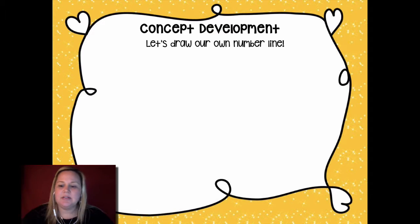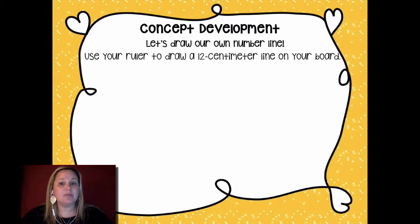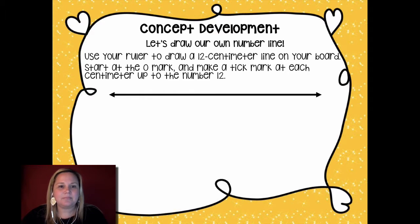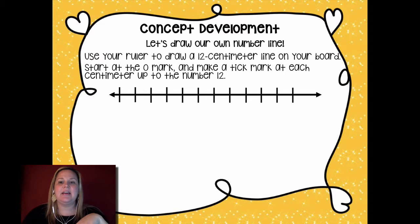If you have your materials, here's how you're going to do this. You're going to use your ruler to draw a 12 centimeter line on your board. So take your ruler, stretch it across your paper, draw from zero to 12, draw a line straight across. Then you're going to start at the zero mark and make a tick mark at each centimeter on the number line up to the number 12. So you have your line still right there, your ruler. So at zero, you draw a little line on your number line. And then when you get to one centimeter, draw another line like this. So zero, then this is going to be your one centimeter, two centimeters, three, four, five, six, seven, eight, nine, 10, 11, 12.